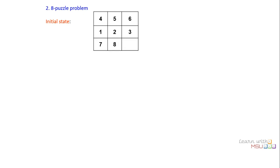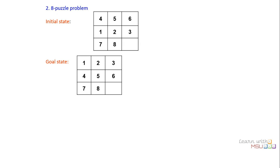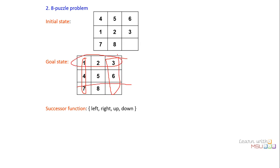The 8-puzzle problem has nine squares with one square empty. Starting from an initial arrangement, your goal is to rearrange them into a target configuration. You can shift tiles — for example, move 8 to the right or move 6 down. The successor function allows moving tiles left, right, up, or down, but with restrictions: you can't perform the left action from the leftmost column squares (1, 4, 7), and you can't perform the right action from the rightmost column squares (3, 6, 9).